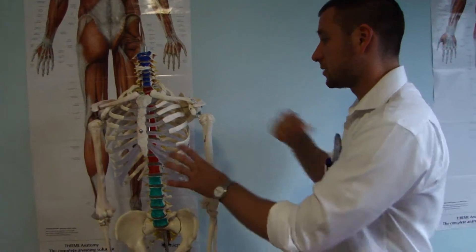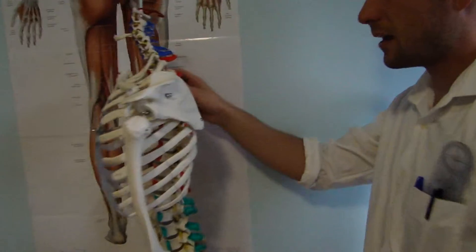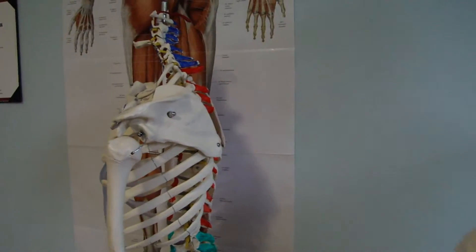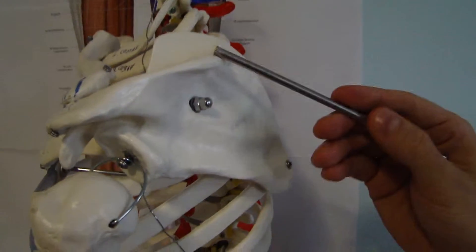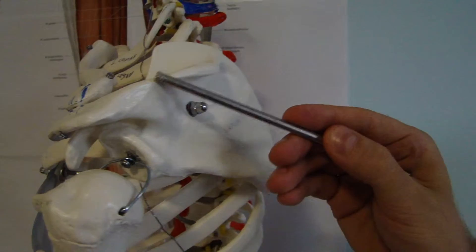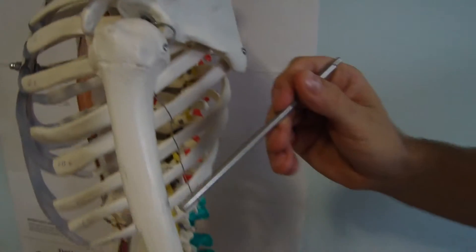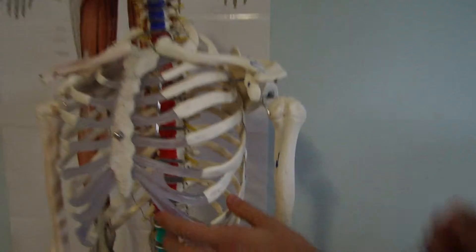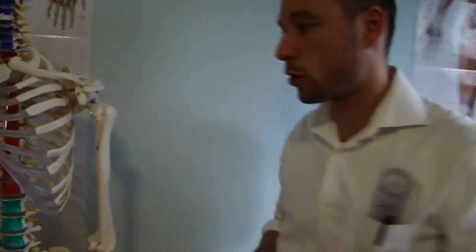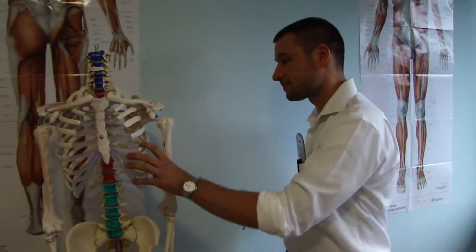Second muscle which I would like to describe is deltoid pars spinalis. This is basically the posterior head. It goes from this area here and goes down to deltoid tuberosity as well. The deltoid, all of the deltoid heads, get nerve supply from axillary nerve. And before I forgot, coracobrachialis gets nerve supply from musculocutaneous.